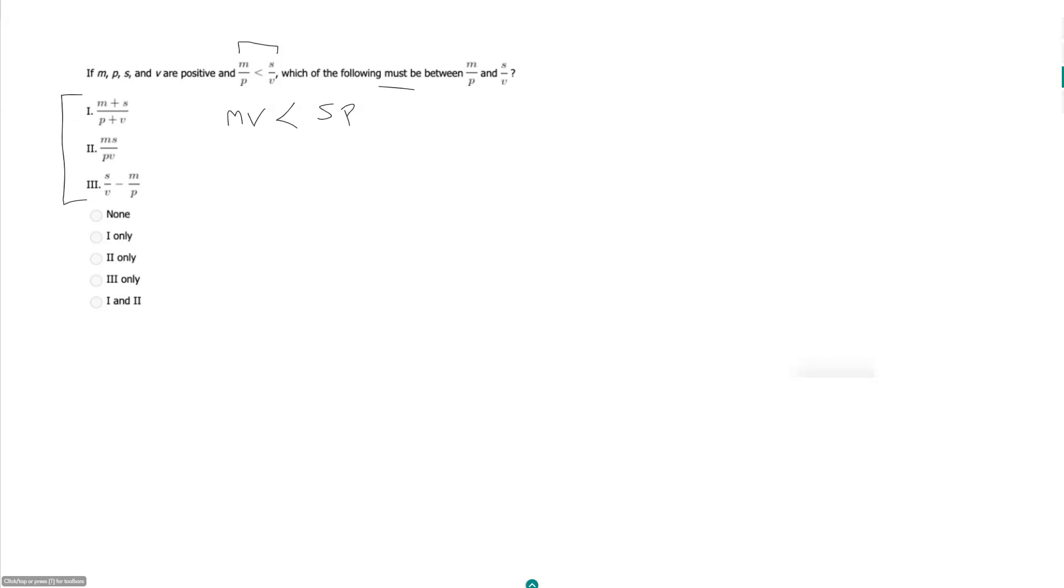So let's start, let's just try and come up with an easy example here. So let's say 1 over 4 is less than 2 over 3. So in this case we are saying m equals 1, p equals 4, s equals 2, and v equals 3.